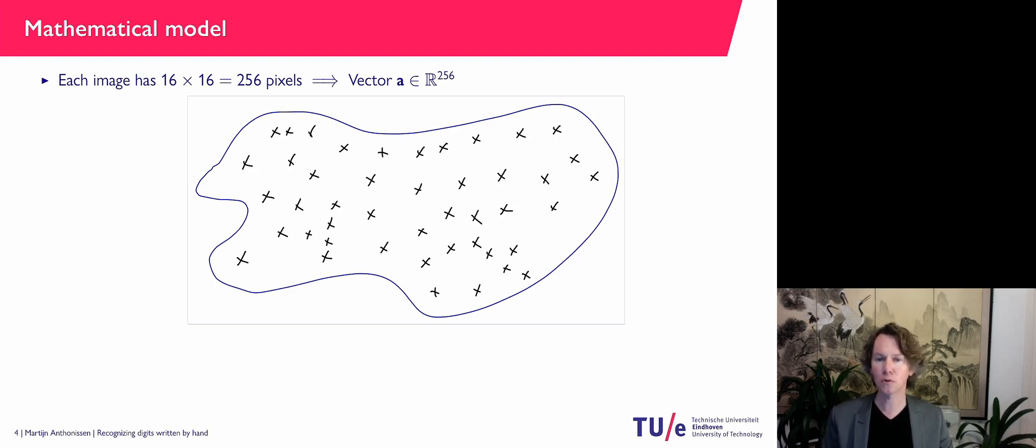Next we are going to consider all possible vectors. So all vectors in R^256 and we could kind of visually represent a training set as these black crosses.